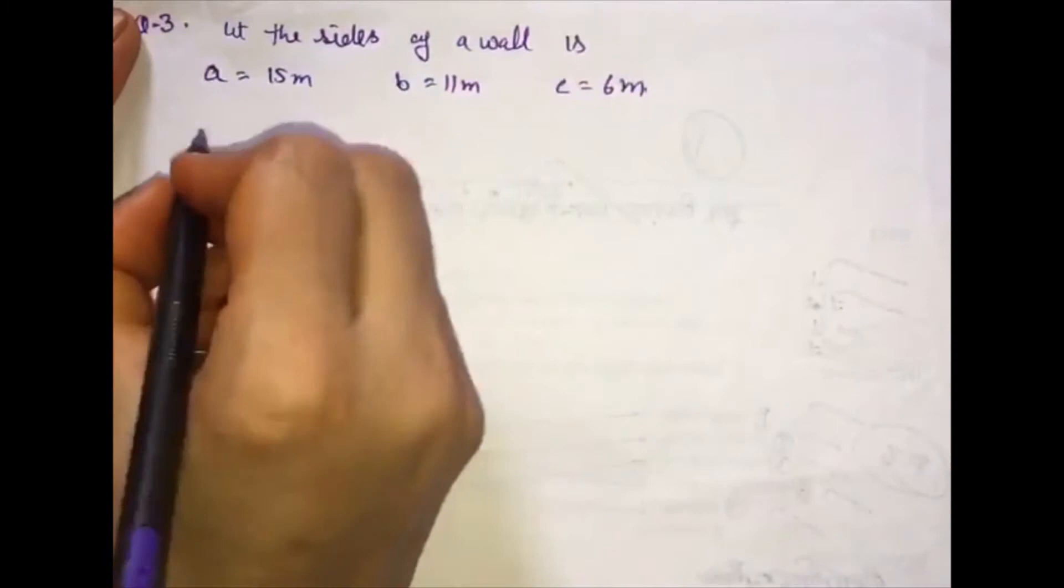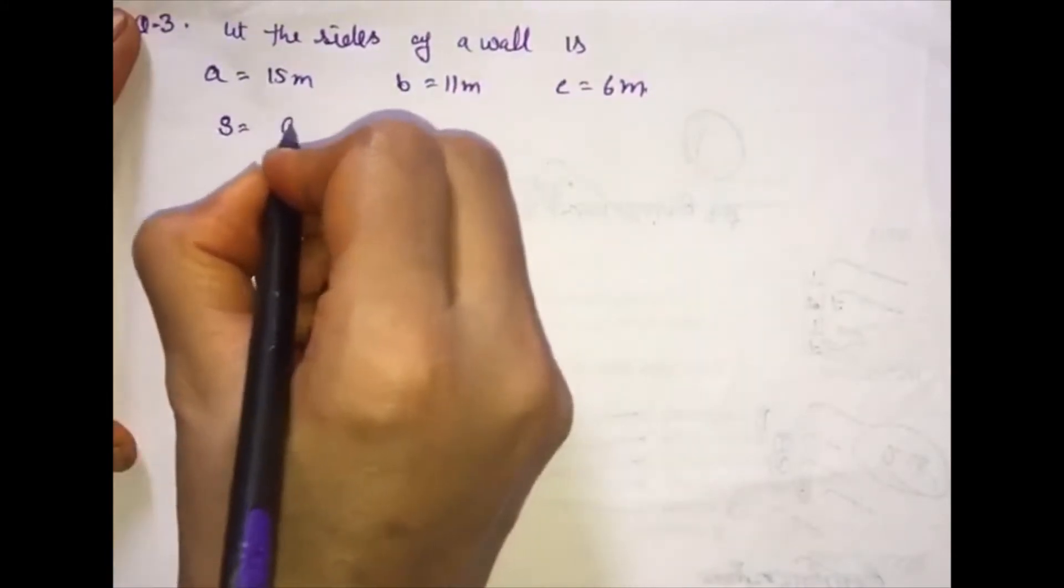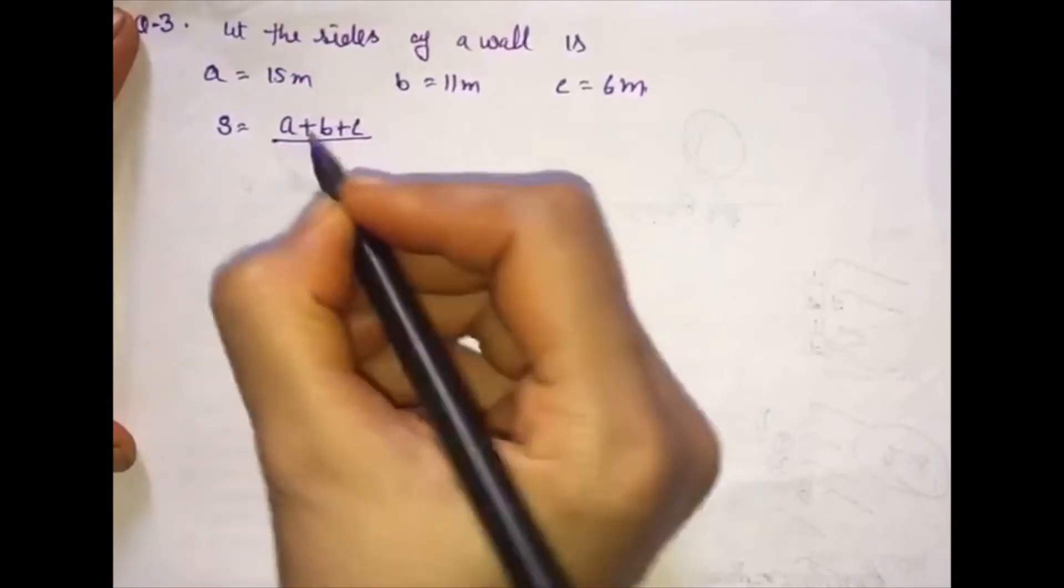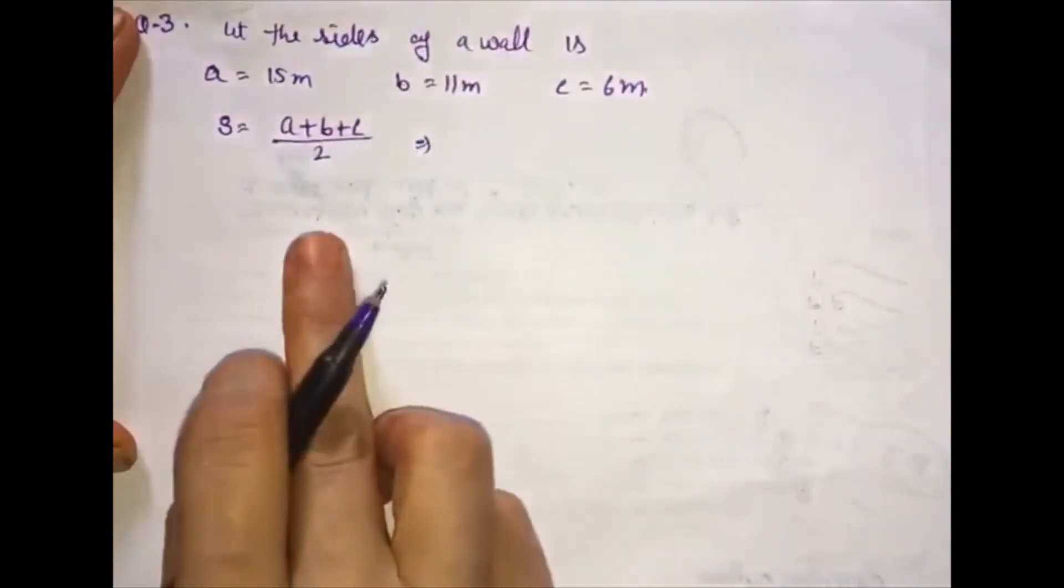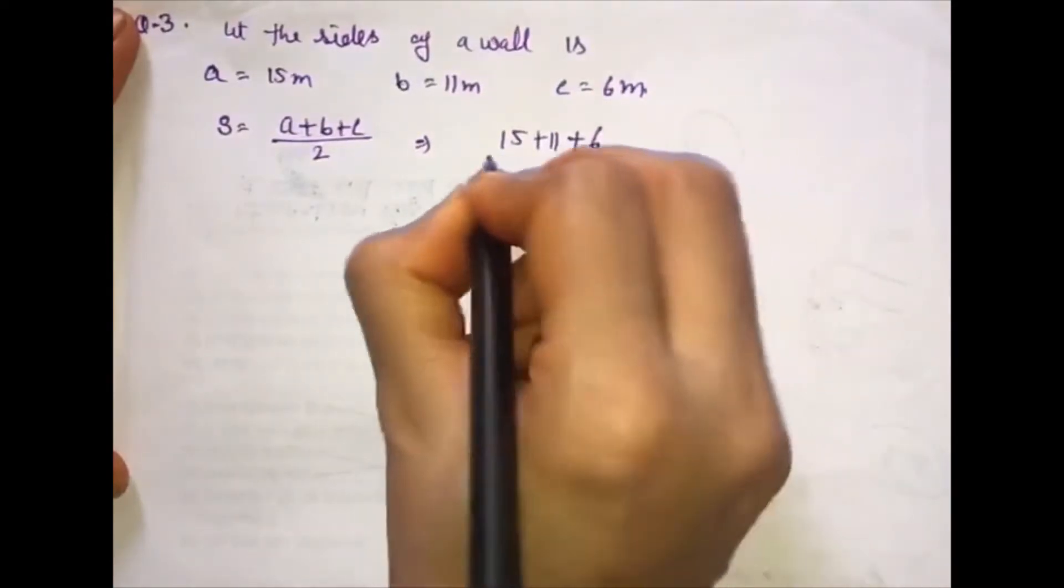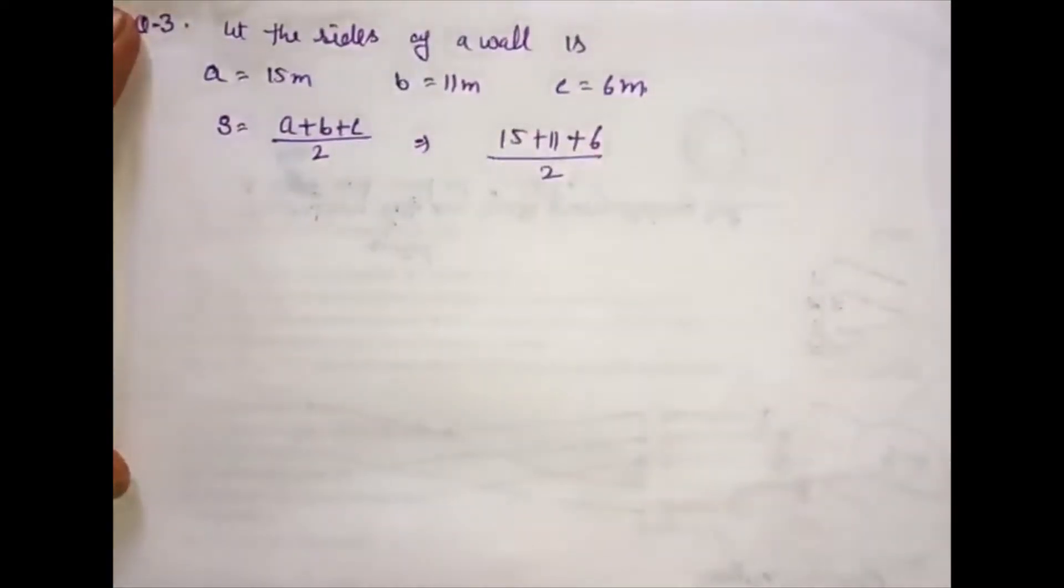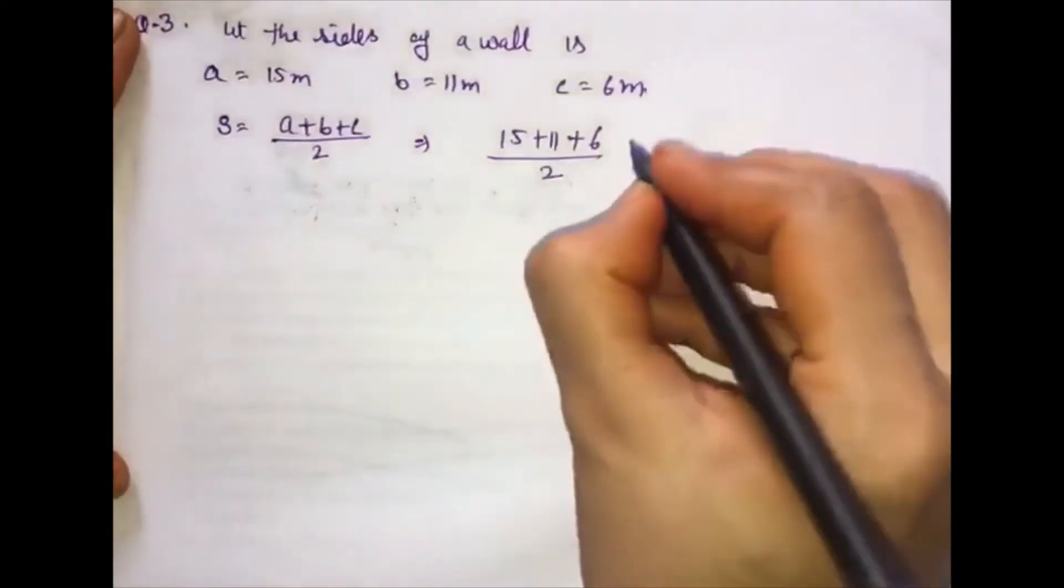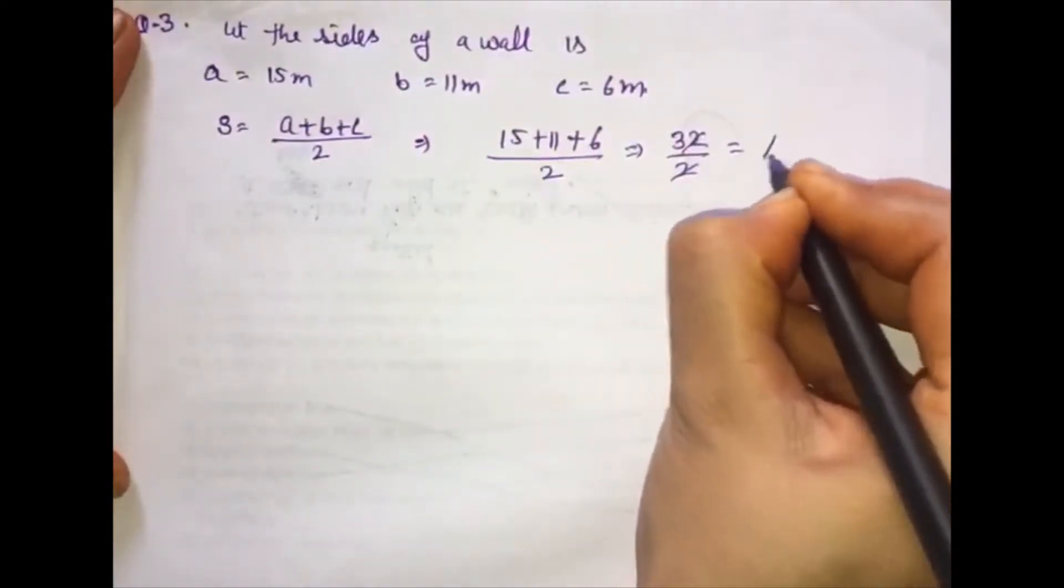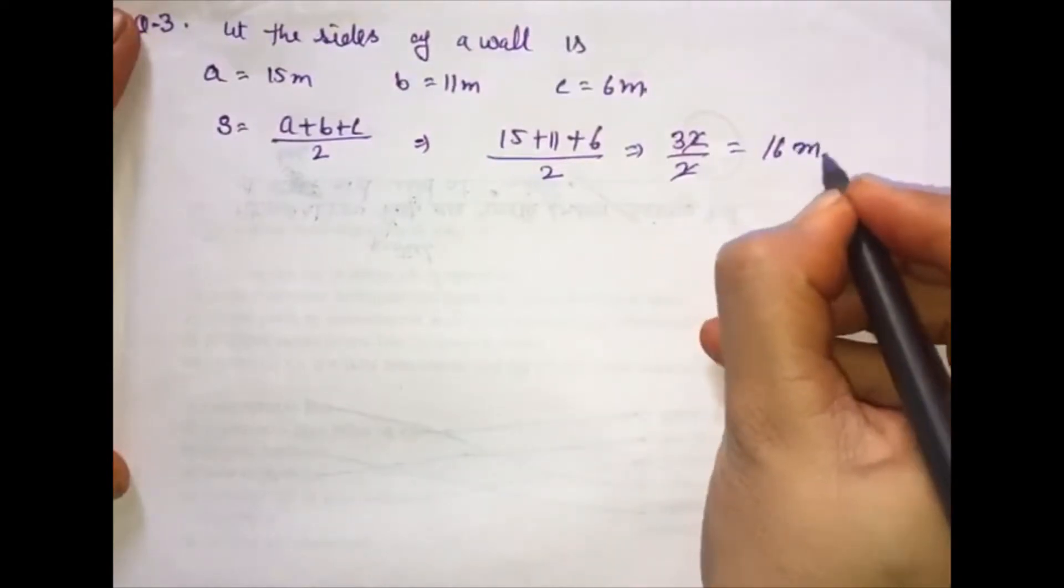Semi-perimeter S is A plus B plus C divided by 2. Putting the values: 15 plus 11 plus 6 divided by 2. This is 32 divided by 2, which equals 16 meters.